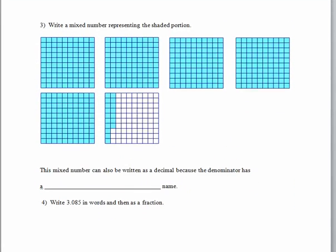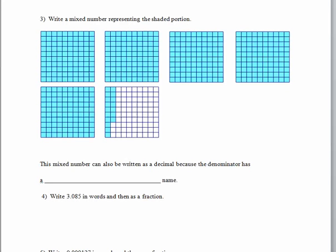Here - oh my, there's a lot of pieces. If you count, there are 10 squares across the top and 10 squares down the side, so 100 small squares in each picture. If we write a mixed number representing the shaded portion...